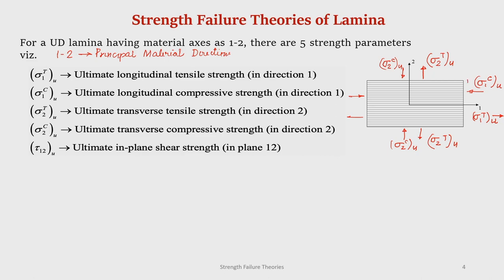If we load in the transverse direction by compressive stress, the maximum stress it can withstand is sigma_2Cu. Similarly, if you load this lamina with in-plane shear, the maximum it can withstand is the ultimate in-plane shear strength tau_12u. So these are the five strength parameters which are required to specify the strength of an orthotropic lamina.